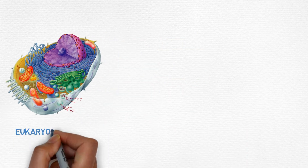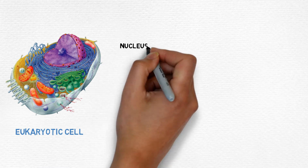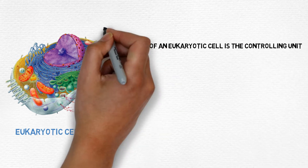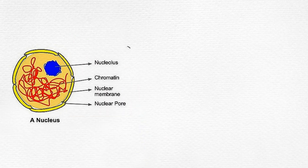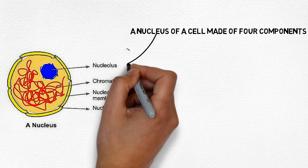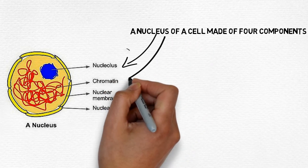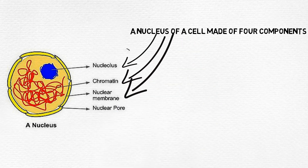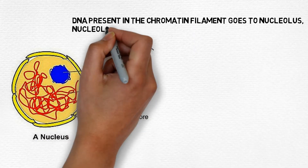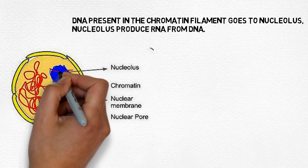Here in this diagram we can see a eukaryotic cell having a complete nucleus. The nucleus is the controlling unit of the cell. The nucleus consists of major components like the nucleolus — the blue dense particle seen here — the chromatin filament, the red filament structure containing DNA, the nuclear membrane which protects the nucleus, and the nuclear pore, which is the gate of the nucleus. The chromatin filament is composed of DNA, and that DNA goes to the nucleolus to produce RNA.